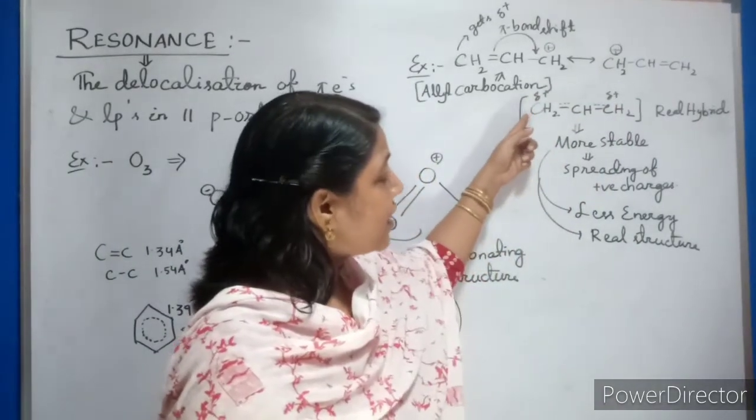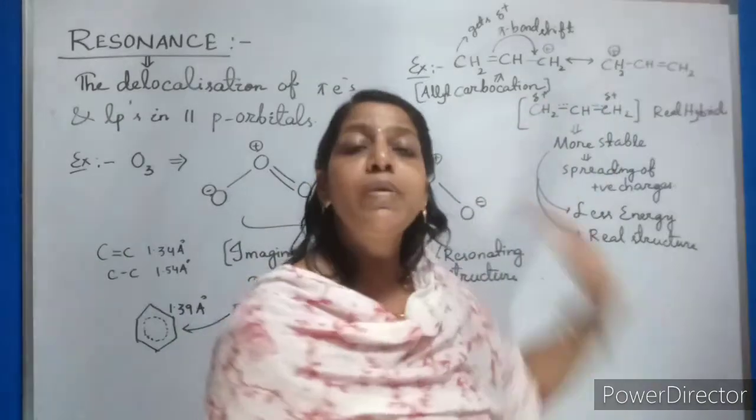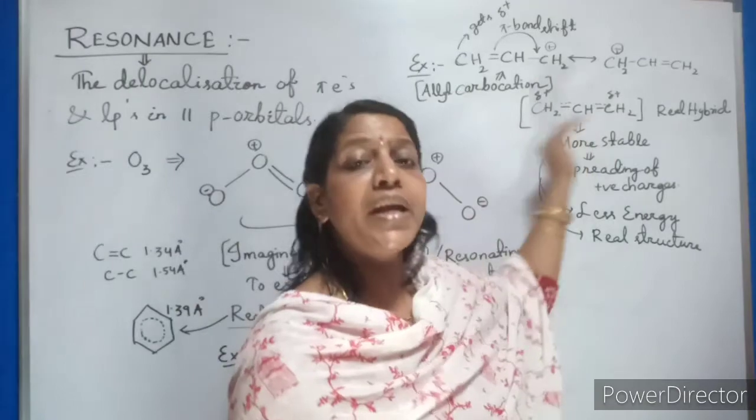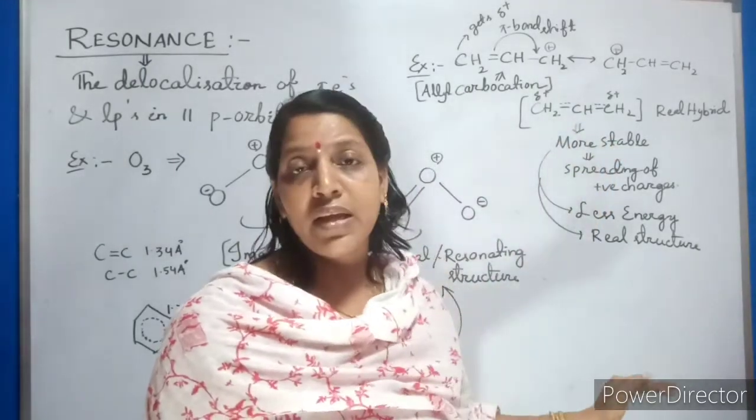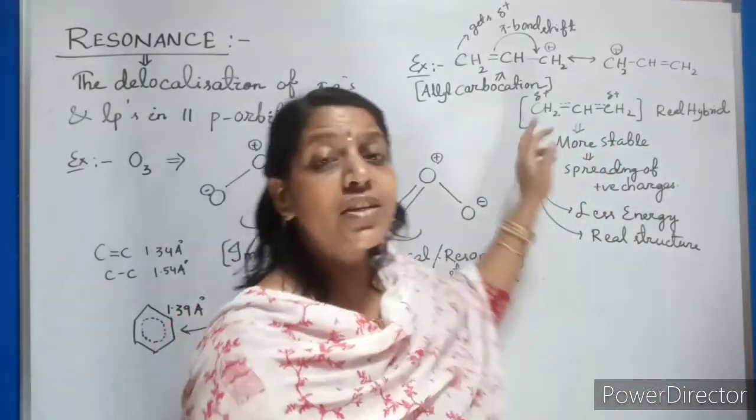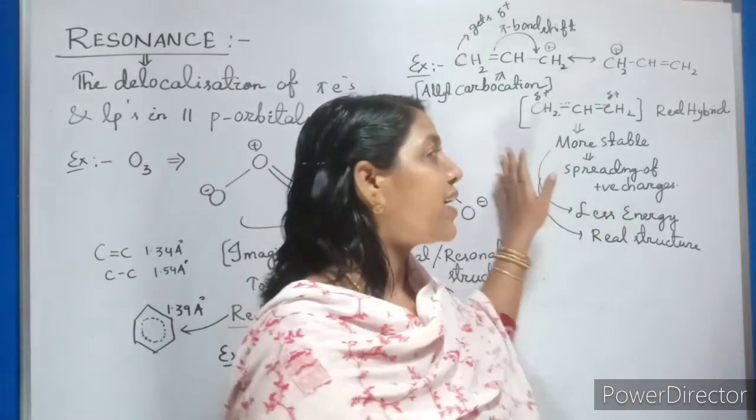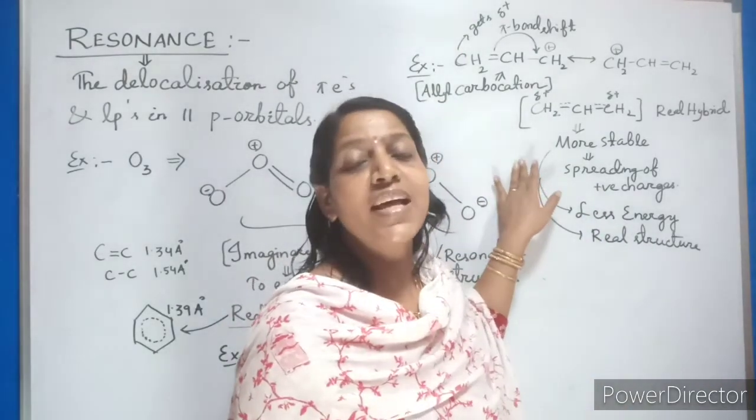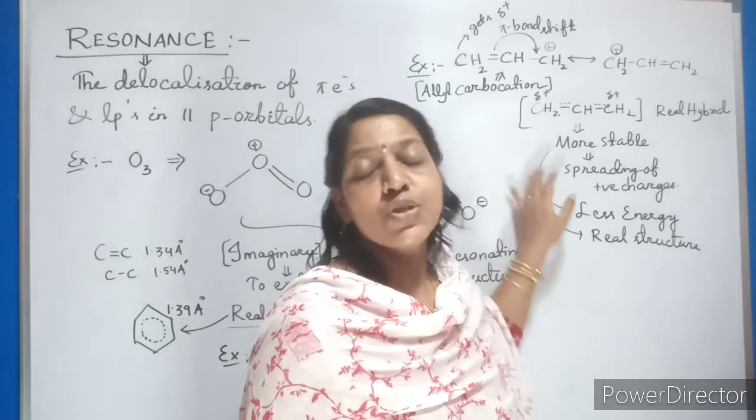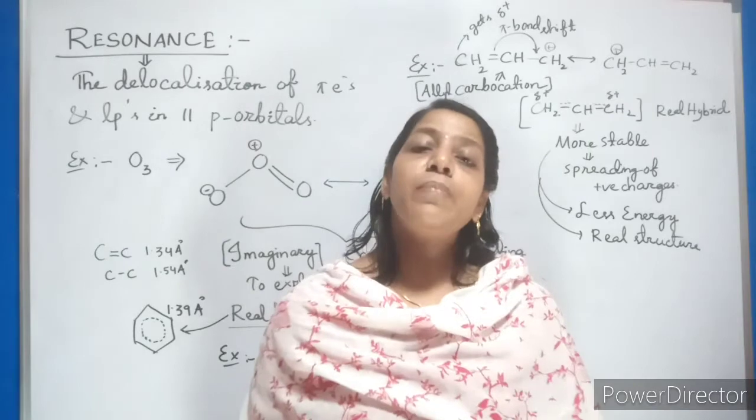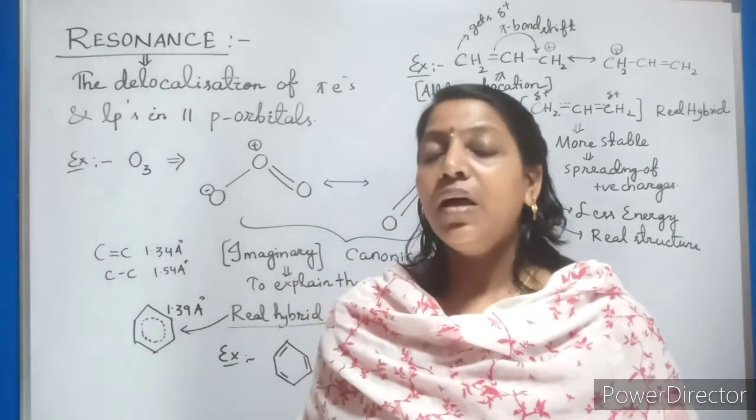Practically they are uniformly distributing this charge. This carbon, starting carbon and ending carbon both will be partially positively charged so that there will be spreading of the charges uniformly. Hence this structure is more stable. More stable means less energy. This is practically happening. Hence this is called as a real hybrid.